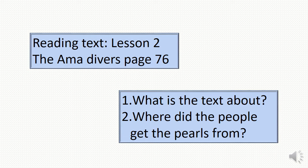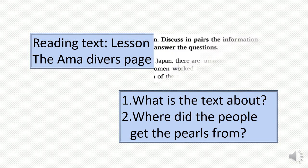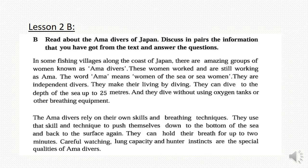Now we are in Lesson 2, and we have another reading text on page 76. My dear students, you have to read the text silently. The text is about a group of people called Emma Divers. The people got the pearls from the ocean. We are in Lesson 2, Part B, and we have another reading text about the Emma Divers of Japan. At first we have to read the text, then discuss it with our partners or friends, and then answer some questions that follow.